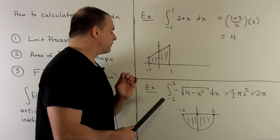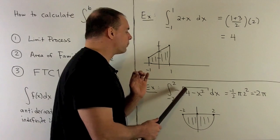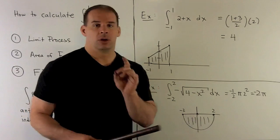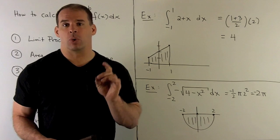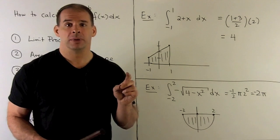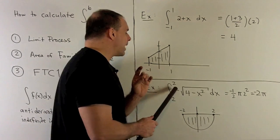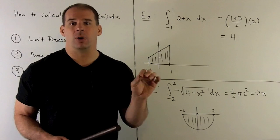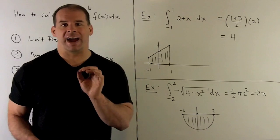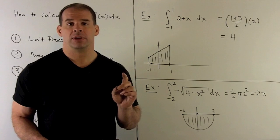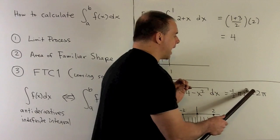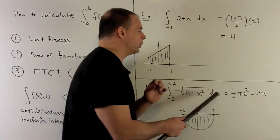Next example: the definite integral from minus two to two of negative square root of (4 − x²) with respect to x. If we let y equal our function and square both sides, we get x² + y² = 4, so the curve is a circle centered at the origin of radius two. The square root only returns positive values but we put a minus sign in front, so we only keep the part below the x-axis — that's the lower semicircle. Since it's below the x-axis, we compute the area and tack on a minus sign: (1/2)π(2²)(−1) gives us minus two pi.